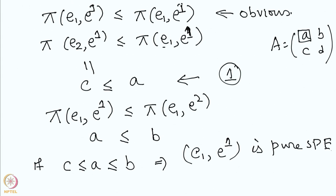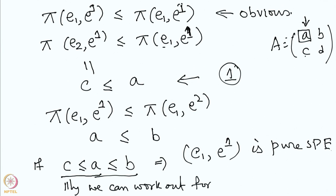If (e1, e1) is to be an equilibrium, when player 1 chooses row 1, player 2 should not deviate from column 1 to column 2 — that means A should be smaller than B, which is exactly this condition. For player 1, if player 2 fixes column 1, player 1 should not deviate from row 1 to row 2 — that means A should be bigger than C. Similarly, we can work out the other cases.